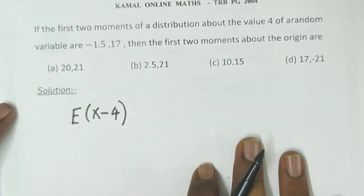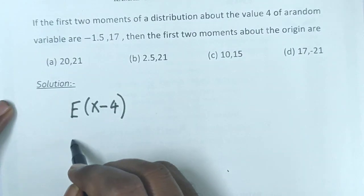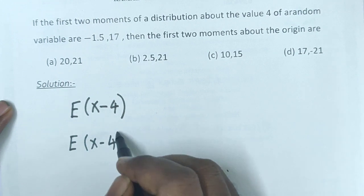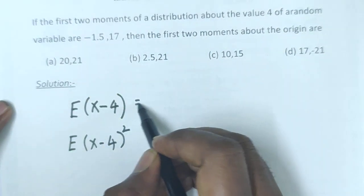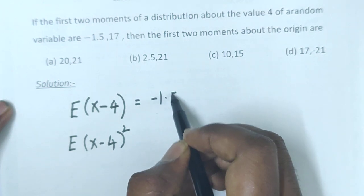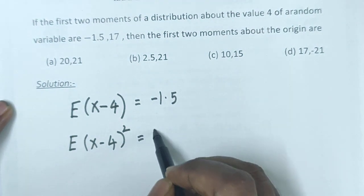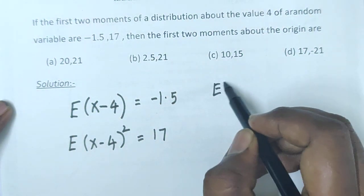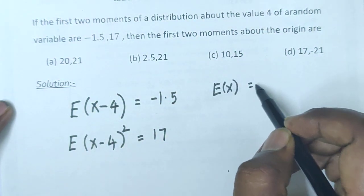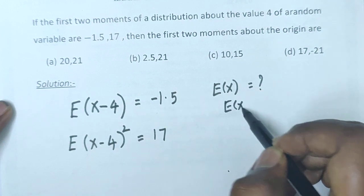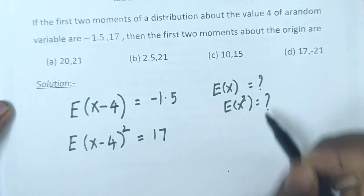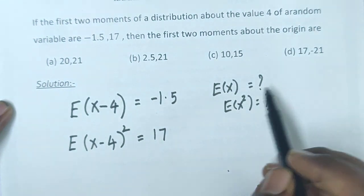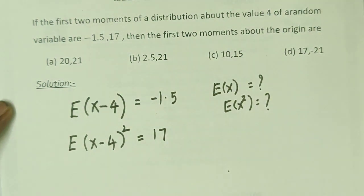The second moment, the first value is minus 1.5 and second value is 17. Question is the value of E of x and E of x square about the origin, like x minus 0, x square minus 0, I mean x minus 0 whole square.